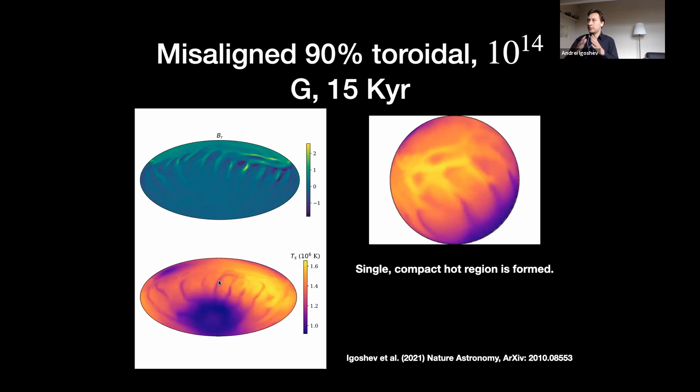What else can we do? We can introduce some misalignment between poloidal and toroidal magnetic field. In this case, we form a single hot spot which is quite small. Of course, we still see a lot of these fingering structures—again, instability of the toroidal magnetic field. But still, this single hot spot could possibly affect how we observe these neutron stars.